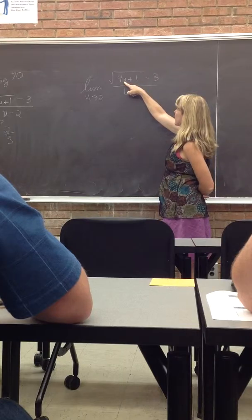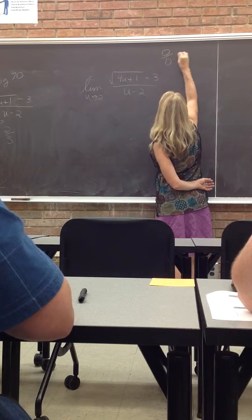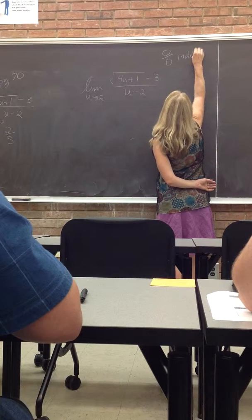When I plug 2 up here, I actually get the square root of 9 minus 3. So I end up with 0 over 0, which is an indeterminate form.